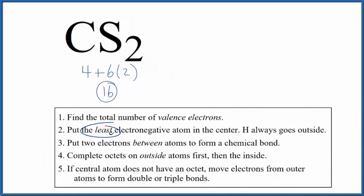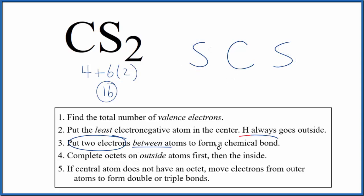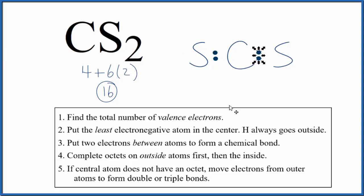We put the least electronegative element in the center — that's going to be the carbon. So we'll have a carbon with a sulfur atom on either side. Next, we'll put two electrons between the atoms to form the chemical bonds. This will be a covalent bond where they're sharing — two here, two here. We've formed our chemical bonds.